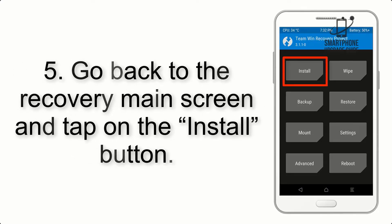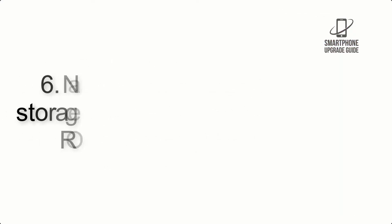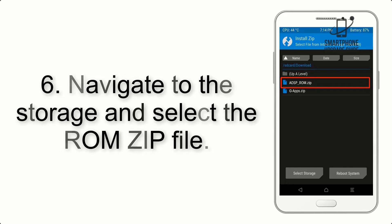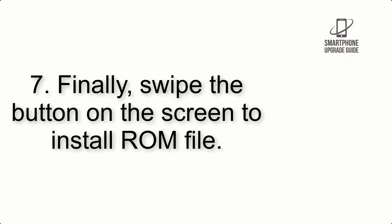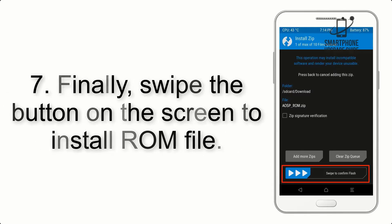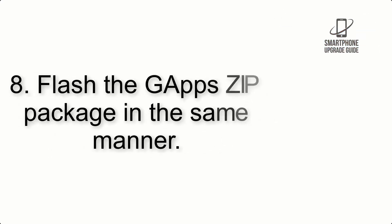Step 4: Swipe the button to wipe the device. Step 5: Go back to the recovery main screen and tap on the Install button. Step 6: Navigate to the storage and select the ROM zip file.